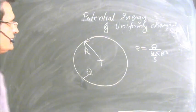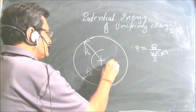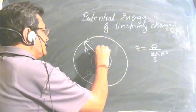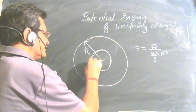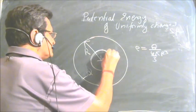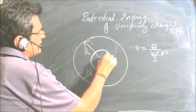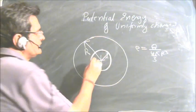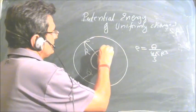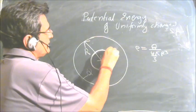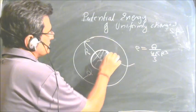The potential energy can be easily found by considering the work done in assembling the sphere with total charge Q. At any given point of time, let r be the radius of this partially assembled sphere. What is the potential at this point due to the charge inside?